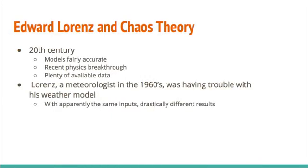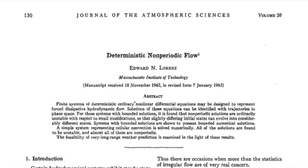Before we get into the proof of the idea of chaos theory, it's helpful to have a little bit of background. Edward Lorenz in the 1960s had a little bit of trouble with the weather model that he was using. At this point in history, the weather models were pretty accurate — there was a recent breakthrough in the idea that clouds followed the idea of convection, and there was plenty of data available. And despite all this, Lorenz was still running what he assumed were the same initial parameters, and he was getting these drastically different outputs. Lorenz pondered this for a while, and eventually he was able to write about it in this paper titled Deterministic Nonperiodic Flow.